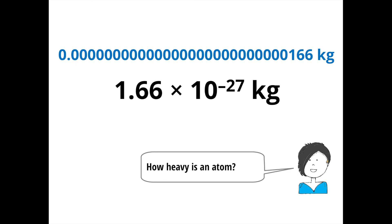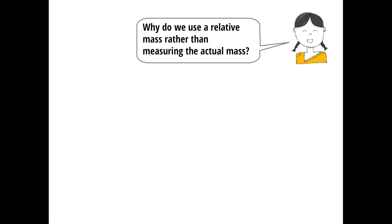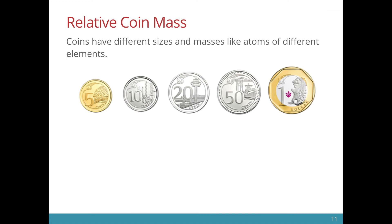And it will be very difficult to weigh an atom by itself as well. So it is very impractical to use the actual mass to count atoms. Instead what we do is to use a relative mass rather than measuring the actual mass. So what does it mean by relative mass? Let's look at this example.